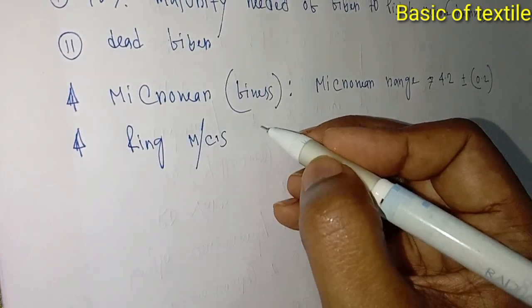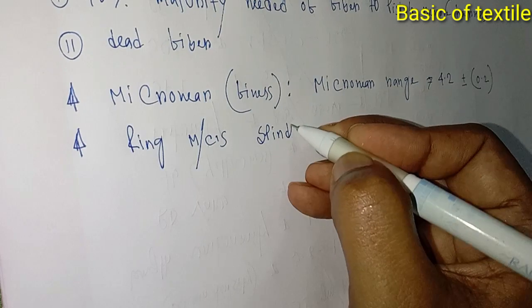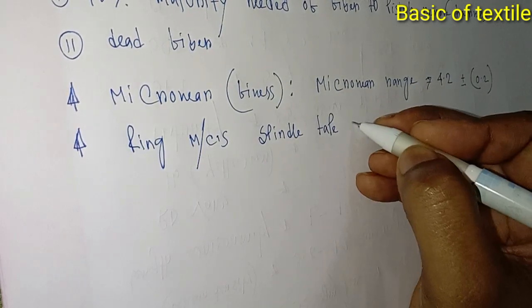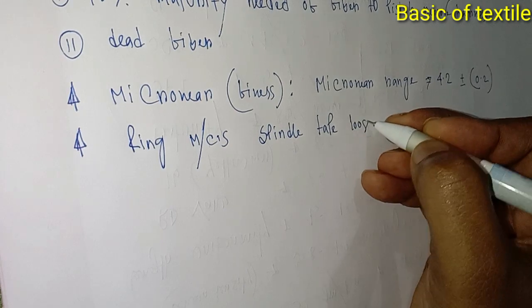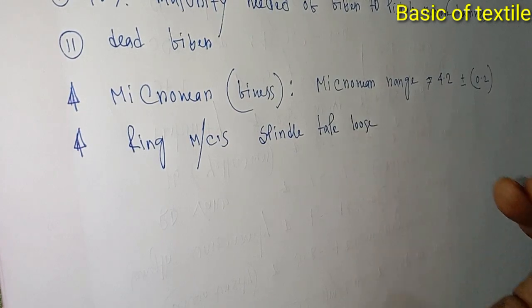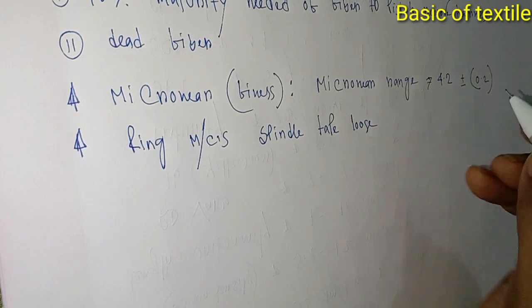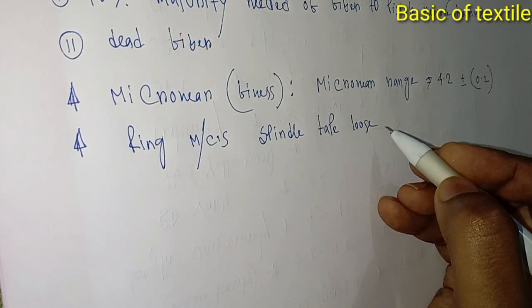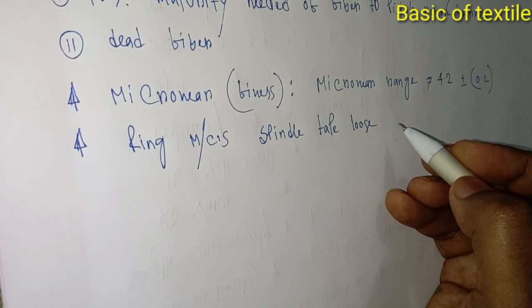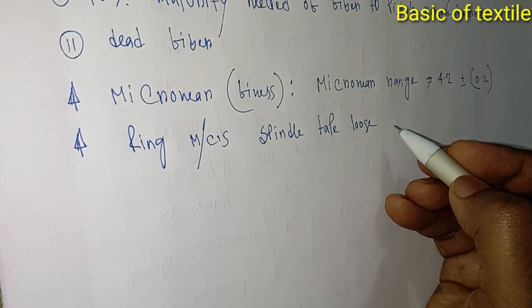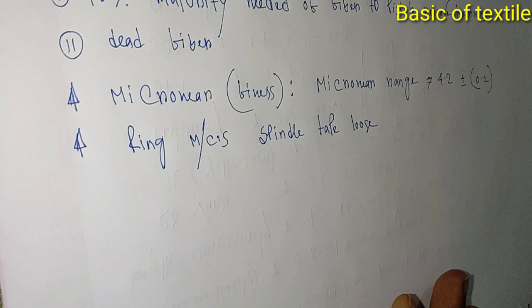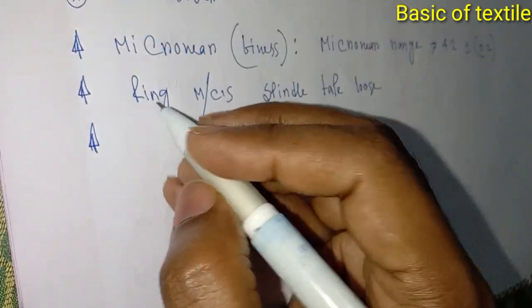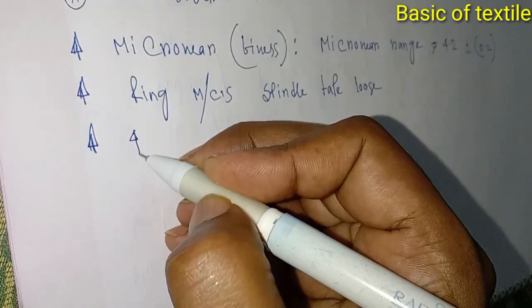In machines, if the spindle tap is loose, it will cause yarn hairiness. The spindle tap should be perfectly adjusted.